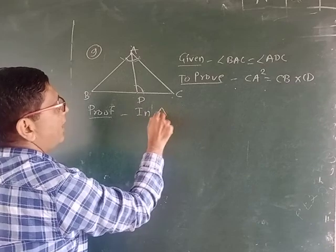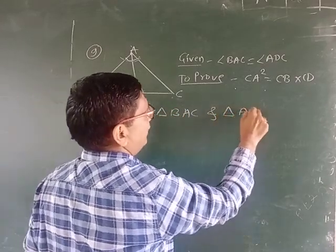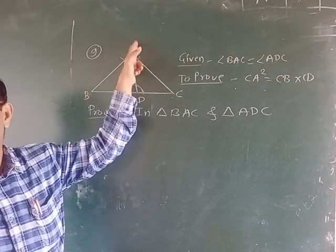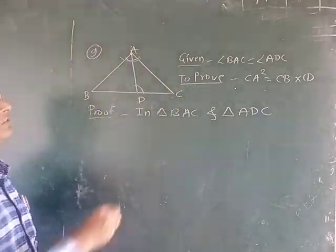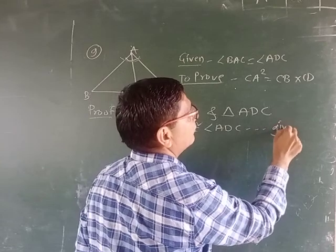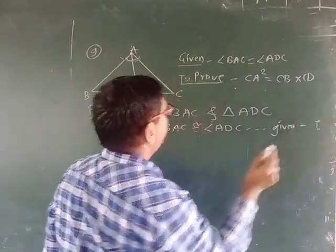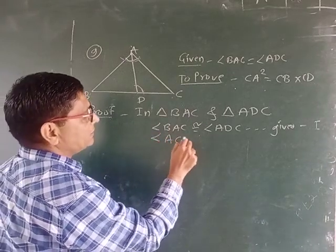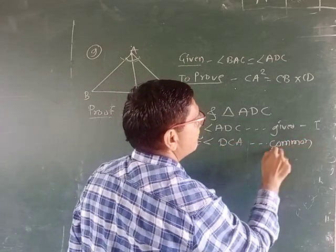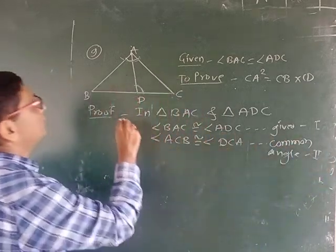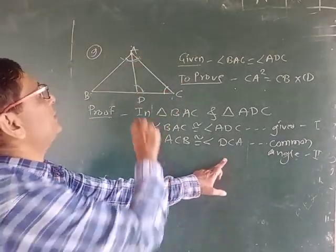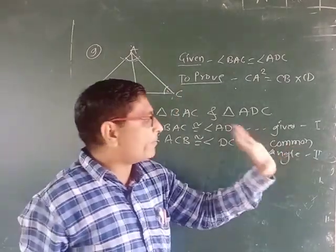In triangle BAC and triangle ADC, in comparison of two triangles, big triangle BAC and small triangle ADC. Angle BAC is congruent to angle ADC, reason given. Then angle ACB congruent to angle DCA, common angle. BCA is also the same angle, therefore common angle.